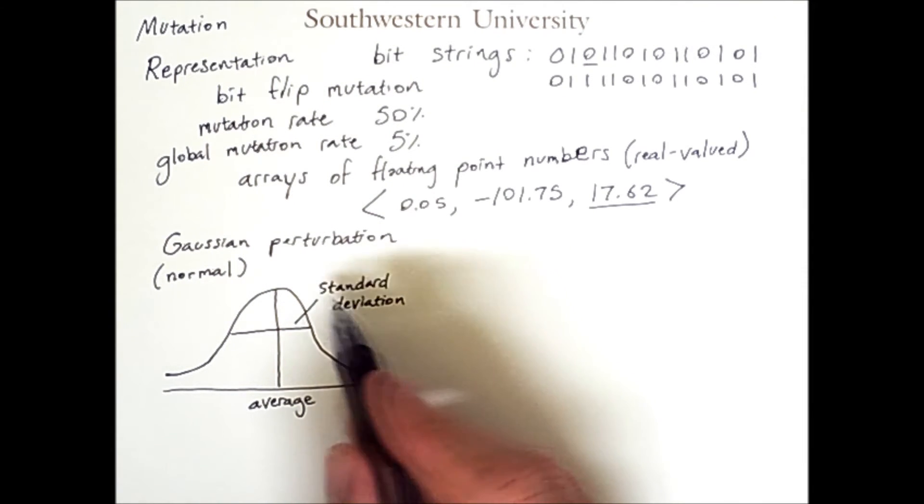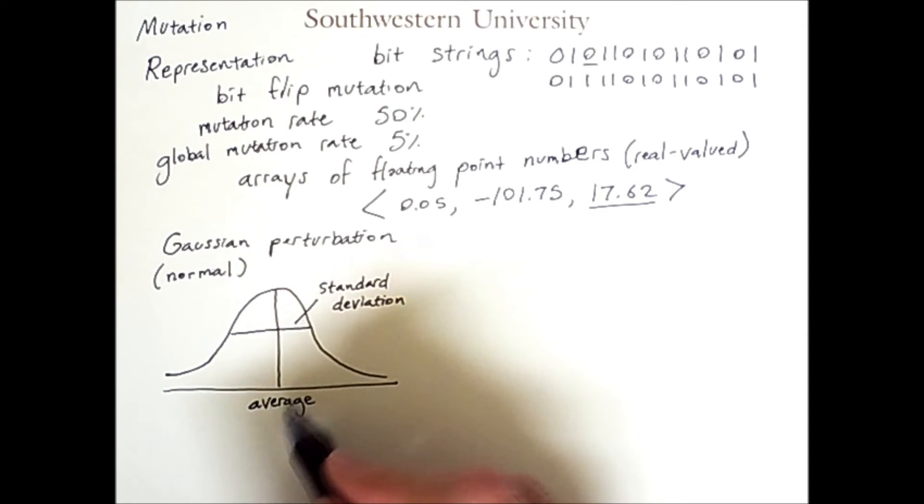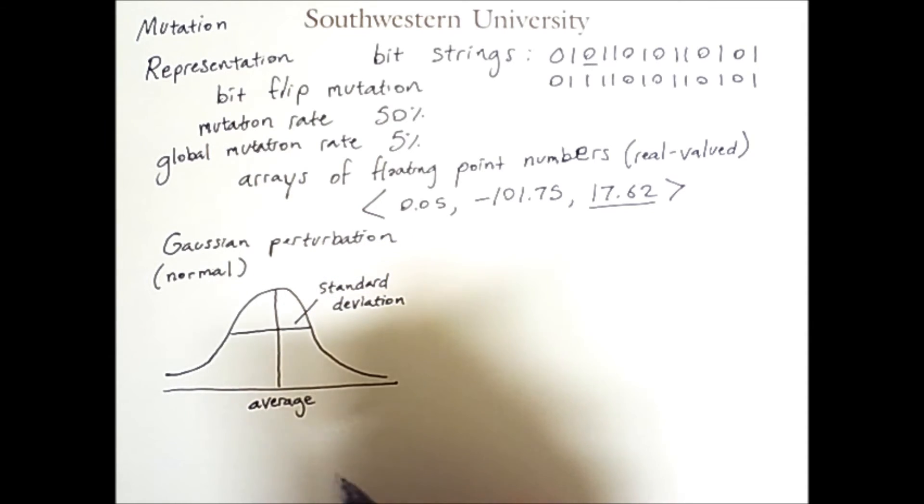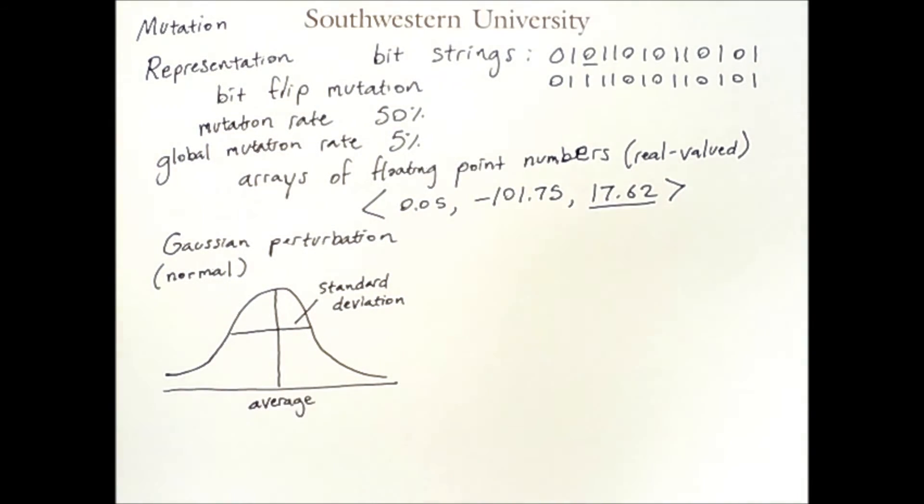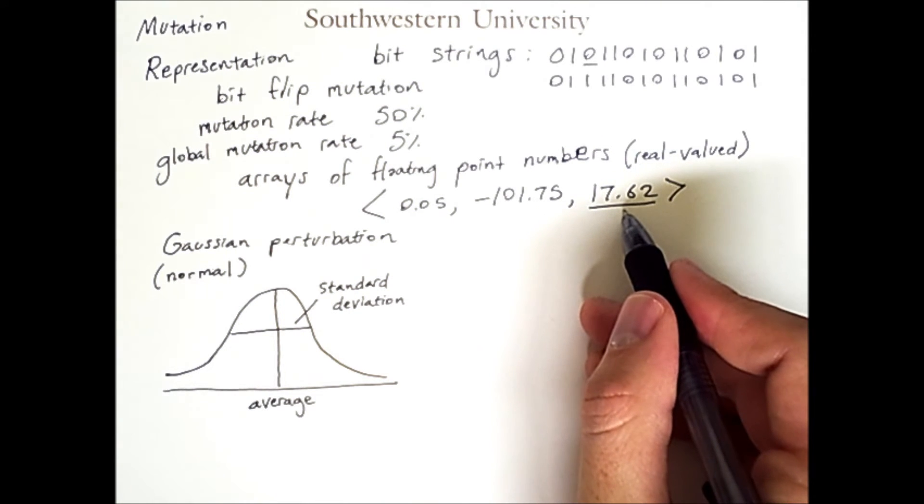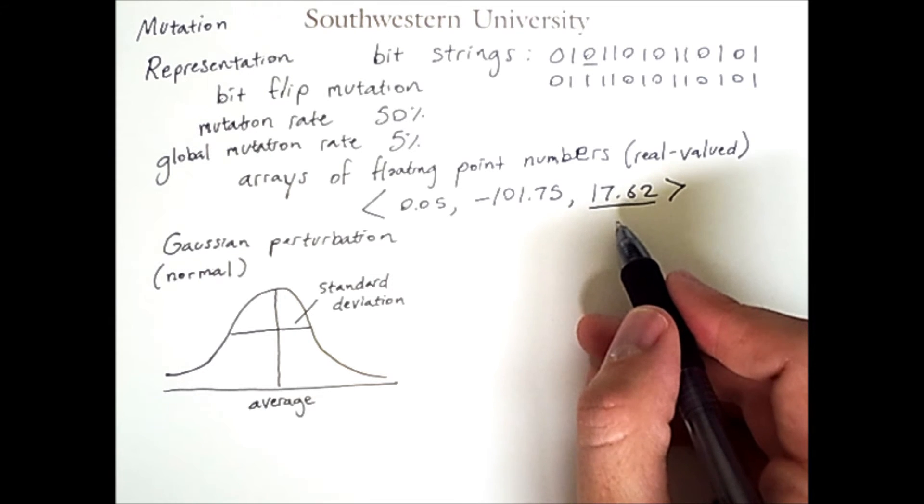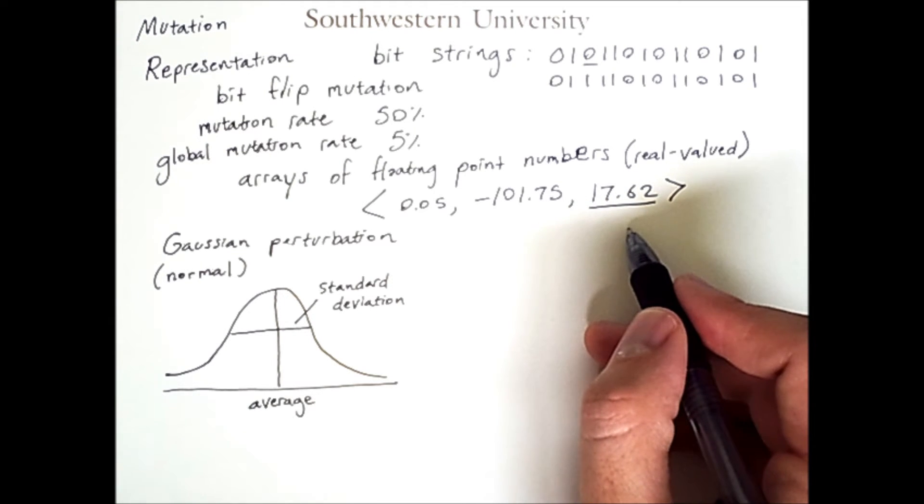A Gaussian distribution is nice because it is completely defined by its average and its standard deviation. You can create different Gaussians by changing these two values. So, if we want to mutate this number, we typically want a value which is more likely to be close to this value than to be far from it.